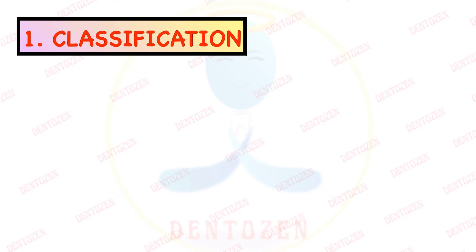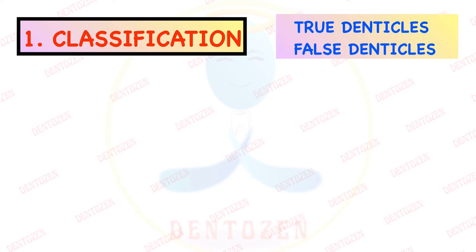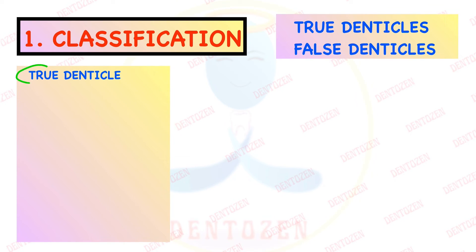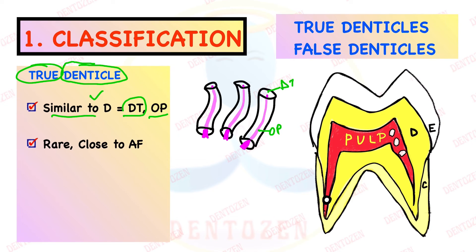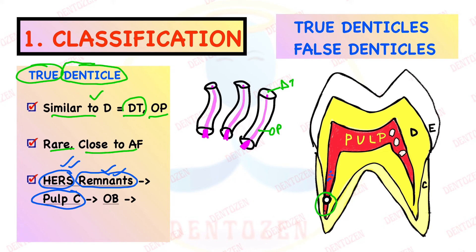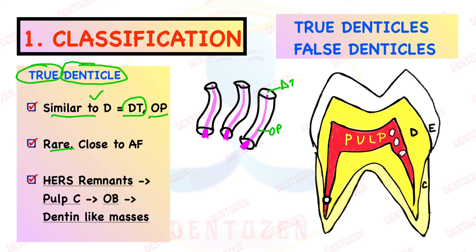There are two classifications. The first classification distinguishes true denticles from false denticles. True denticles, as the name suggests, resemble dentine — like dentine, they also have dentinal tubules and odontoblastic processes within those tubules. These pulp stones are rare, but they are found close to the apical foramen of the root. They form when Hertwig's epithelial root sheath remnants give a signal to the pulp, inducing pulp cells to differentiate into odontoblasts, which then lay down dentine-like masses inside the pulp.